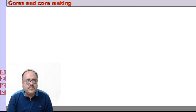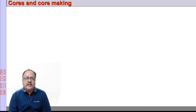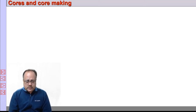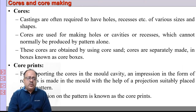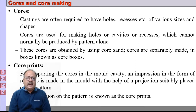Hello friends, welcome to lecture 8 of a series of lectures in which we will be discussing about sand casting and metal casting processes. In this lecture, we will be discussing about cores and core making. Core is basically a sand shape which we insert in the mold to create holes or the internal features or recesses of the casting.